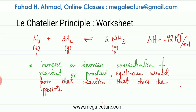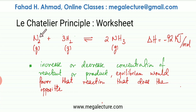For the last rule of Le Chatelier's principle: if you increase or decrease the concentration of any reactant or product, the equilibrium will favor the reaction that does the exact opposite. If you increase H2, equilibrium tries to decrease H2. If you decrease H2, equilibrium tries to make more H2 by favoring the backward reaction. If you increase N2, equilibrium reduces N2 by favoring the forward reaction. Similarly, if you decrease NH3, equilibrium will produce more NH3.